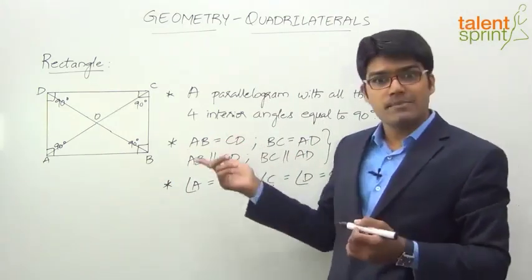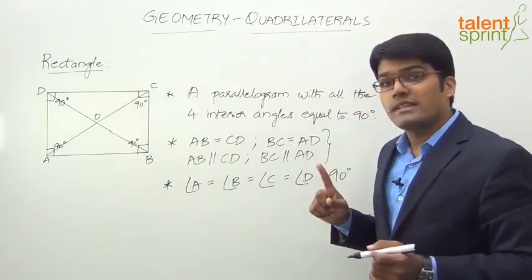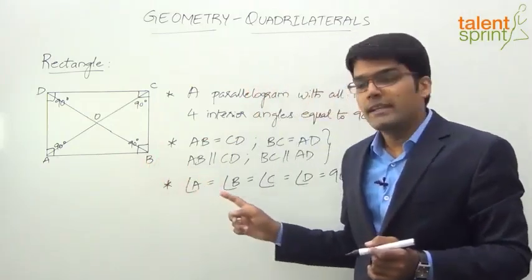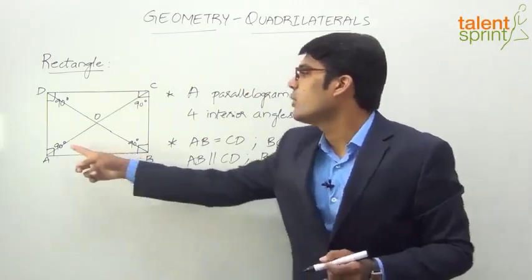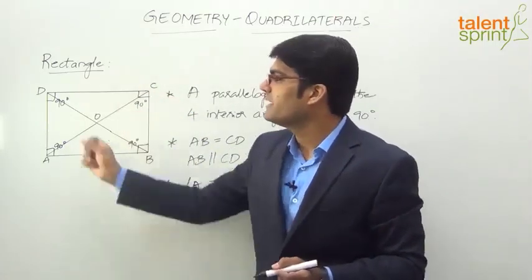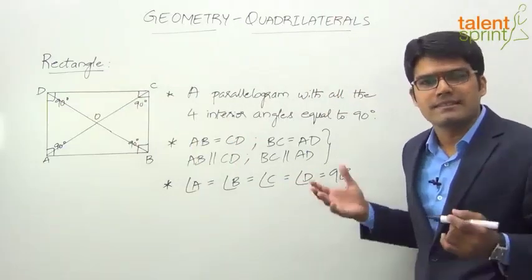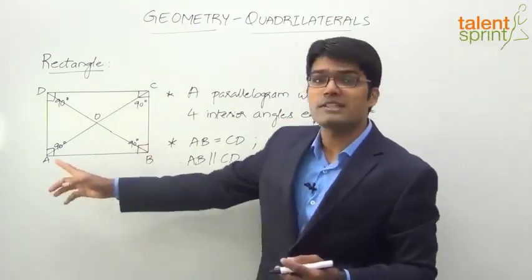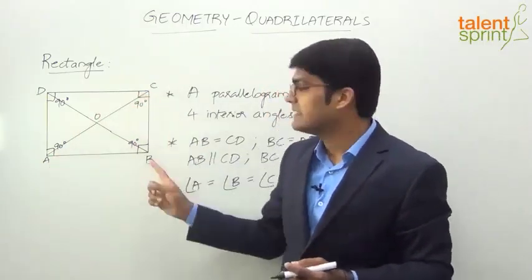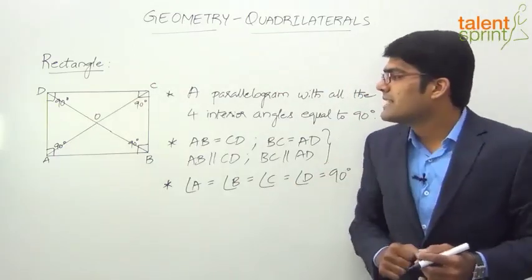Since a rectangle is a parallelogram, the properties of a parallelogram must also be satisfied here. One property we learned was that adjacent pairs of angles add up to 180 degrees: angle A plus angle B is 180°, angle B plus angle C is 180°, C plus D is 180°, and A plus D is 180°. The other property is that opposite angles are equal: angle A equals angle C, and angle B equals angle D.